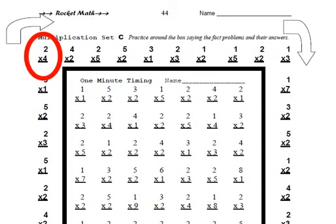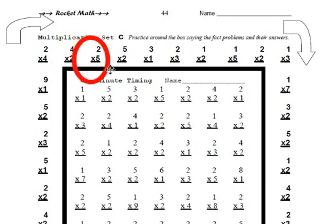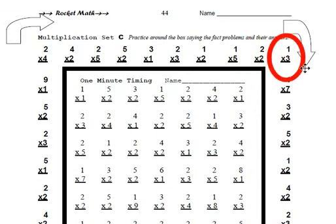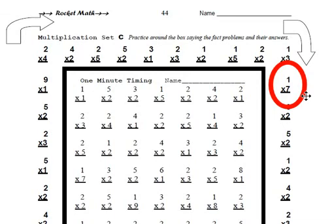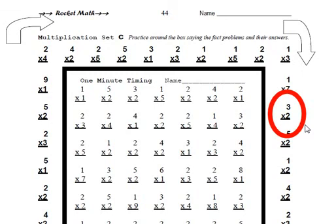4 times 2 is 8. 2 times 5 is 10. 5 times 2 is 10. 3 times 1 is 3. 2 times 3 is 6. 1 times 2 is 2. 1 times 5 is 5. 2 times 2 is 5. 1 times 3 is 3. 1 times 7 is 7. 3 times 2 is 6. And they would continue on around the outside perimeter of the sheet.